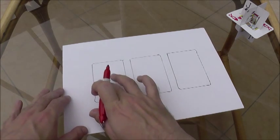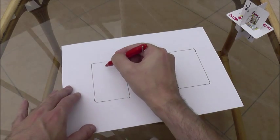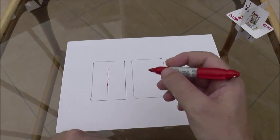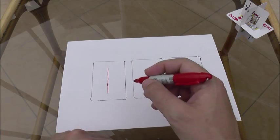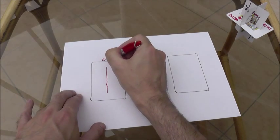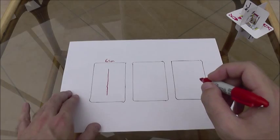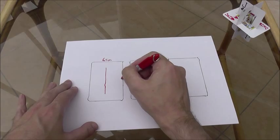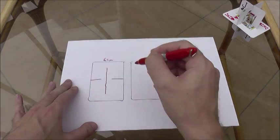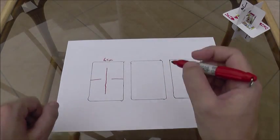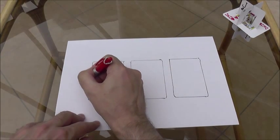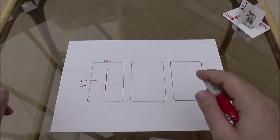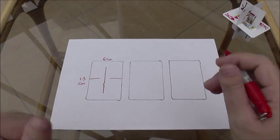One card, let's say this one here, you need a slit down the centre of the card like that. And that slit is 6cm long. You then also need on this card two slits coming in from the sides like this. And those slits are 1.5cm. And that's card 1 if you like.